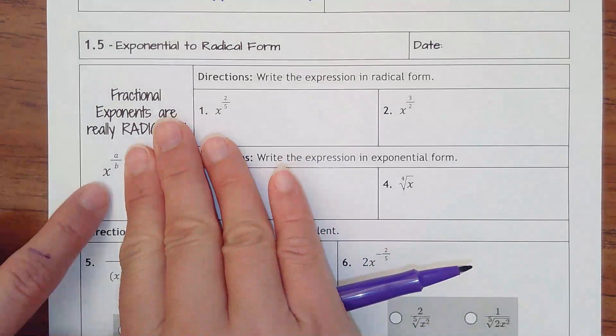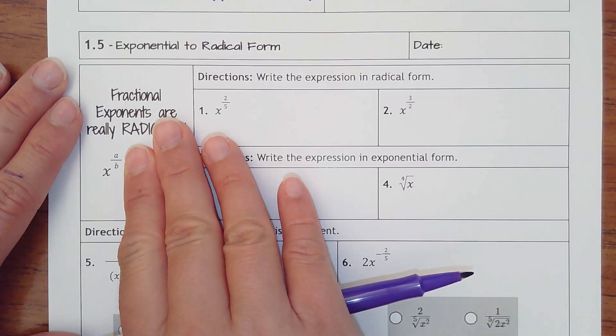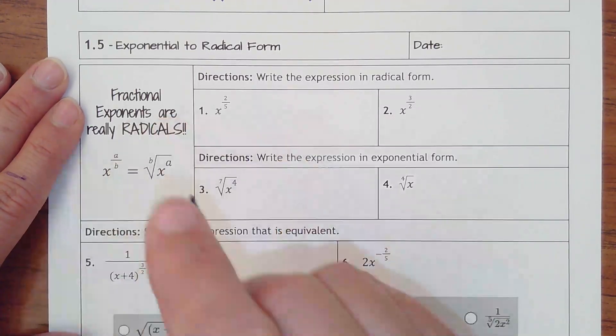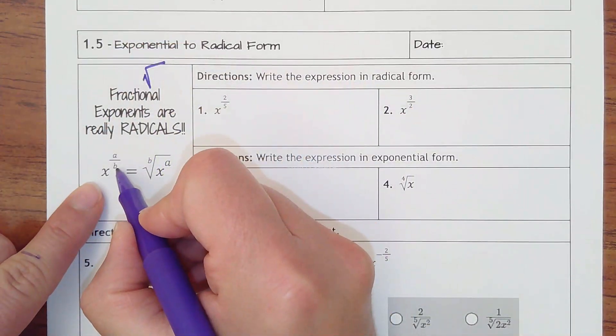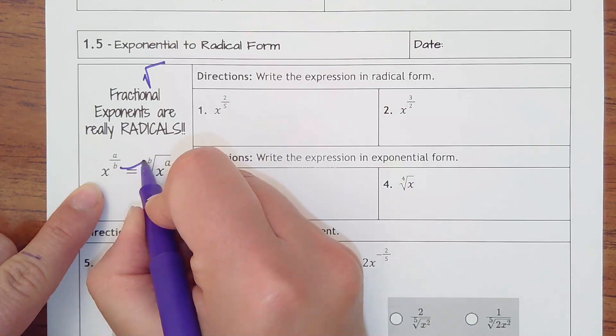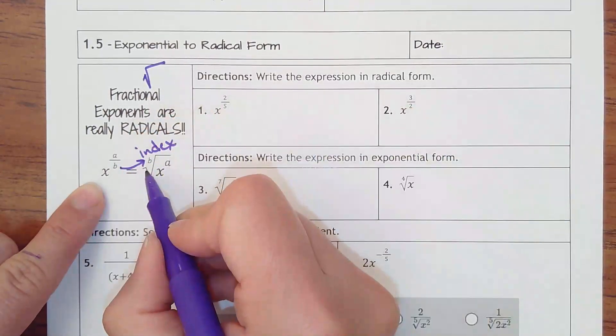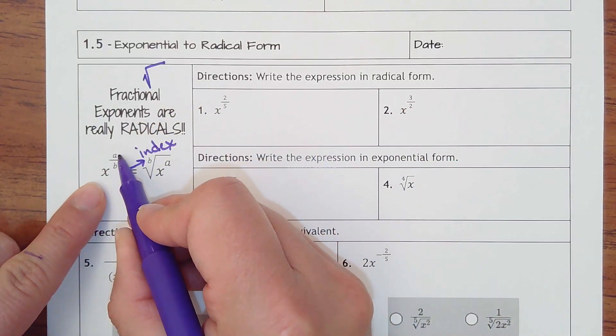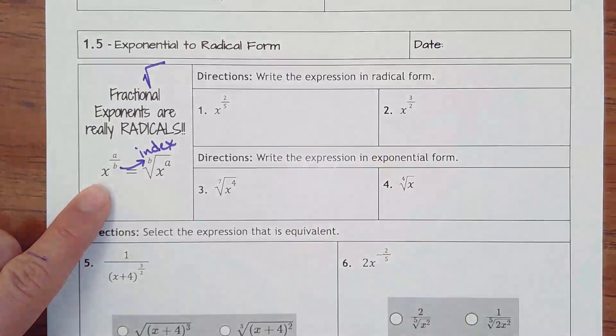So if I were to have the exponent x raised to the a over b power, how I can change that into a radical, which is kind of like a square root, has that symbol. The denominator of the fraction becomes the index, which means is it a square root, is it a cube root, is it a fourth root? And then the a, the numerator, becomes still the power of the base of the exponent. It's really easy.